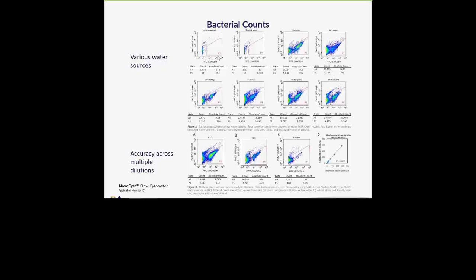With the NovoCyte, which uses a syringe pump that takes up a known exact volume, you can do direct absolute counts without the use of reference beads — saving both time and money. Applying the same gate, you can immediately see all statistics within the software, showing absolute counts ranging from 0.4 to 9,200 cells per microliter across the different water sources. To test the accuracy of the syringe pump, multiple dilutions of the same water sample from 1:10 to 1:1,280 were run, and plotting theoretical values against the NovoCyte absolute counts shows strong linearity, demonstrating the accuracy of the syringe pump.